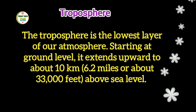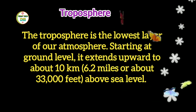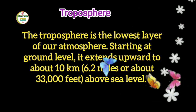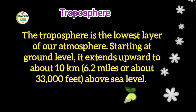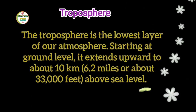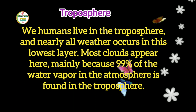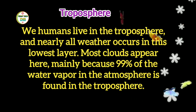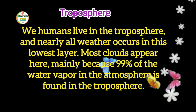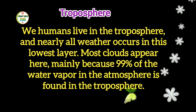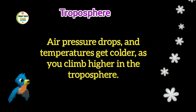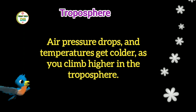The troposphere is the lowest layer of our atmosphere. Starting at ground level, it extends upward to about 10 kilometers (6.2 miles, or about 33,000 feet) above sea level. We humans live in the troposphere, and nearly all weather occurs in this layer. Most clouds appear here, mainly because 99% of the water vapor in the atmosphere is found in the troposphere. Air pressure drops and temperatures get colder as you climb higher in the troposphere.